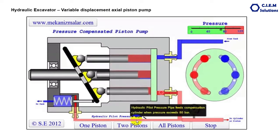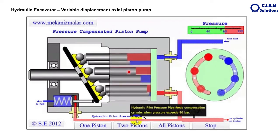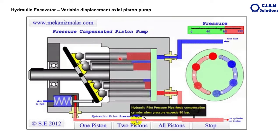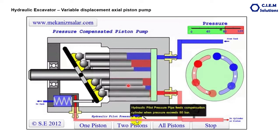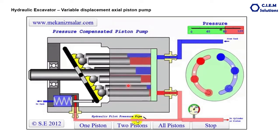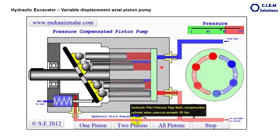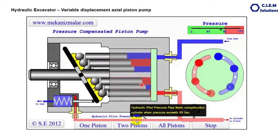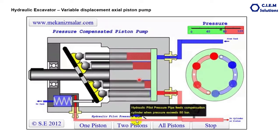Why is it called an axial piston pump? Because a certain set of pistons are arranged axially in a cylinder barrel housing. The pumping action is done by the pistons with the translational movement of the set of pistons inside the barrel. That's why it is called the axial piston pump.